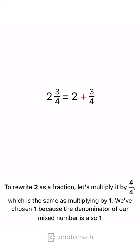To rewrite 2 as a fraction, let's multiply it by 4 quarters, which is the same as multiplying by 1. We've chosen 1 because the denominator of our mixed number is also 4.